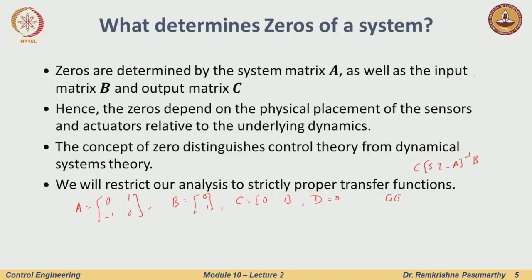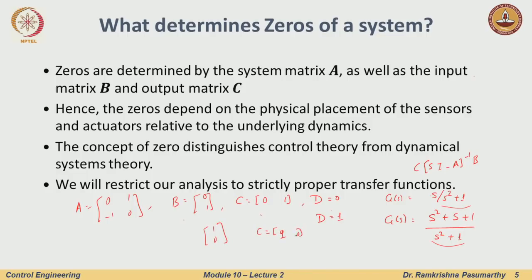Computing G(s) = C(sI − A)⁻¹B gives G(s) = s/(s² + 1). Now keeping A, B, C the same but setting D = 1, G(s) becomes (s² + s + 1)/(s² + 1). The denominator — the poles — does not change. What changes is the numerator, i.e., the location of the zeros. So zeros are determined not only by A, but also by B, C, and in many cases D.